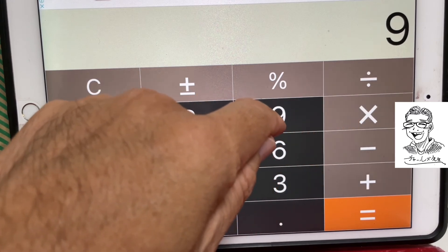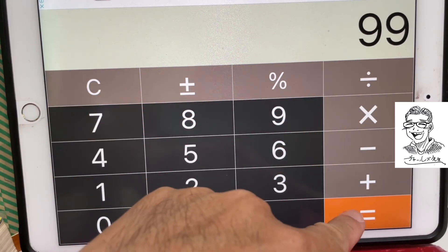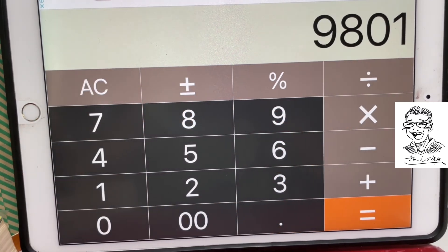So let's check. 99 times 99 equals 9801.